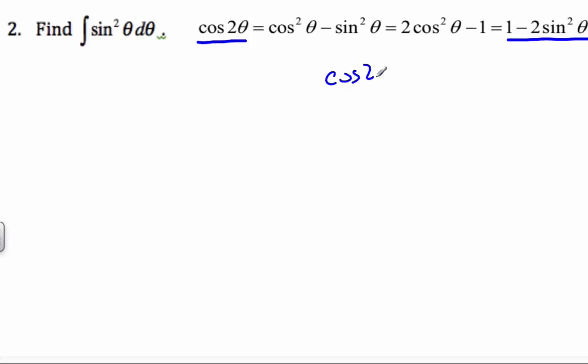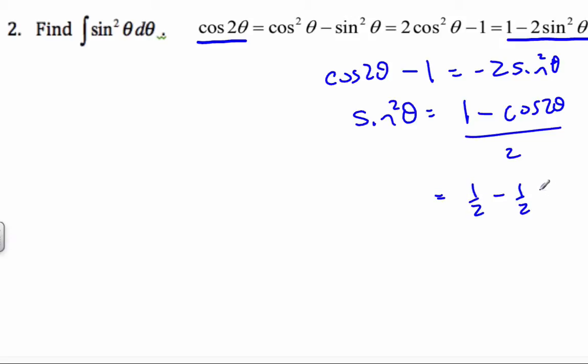I get cos 2θ minus 1 equals negative 2 sin²θ. And so then sin²θ is 1 minus cos 2θ over 2. And I can even rewrite that as 1 half minus 1 half cos 2θ.